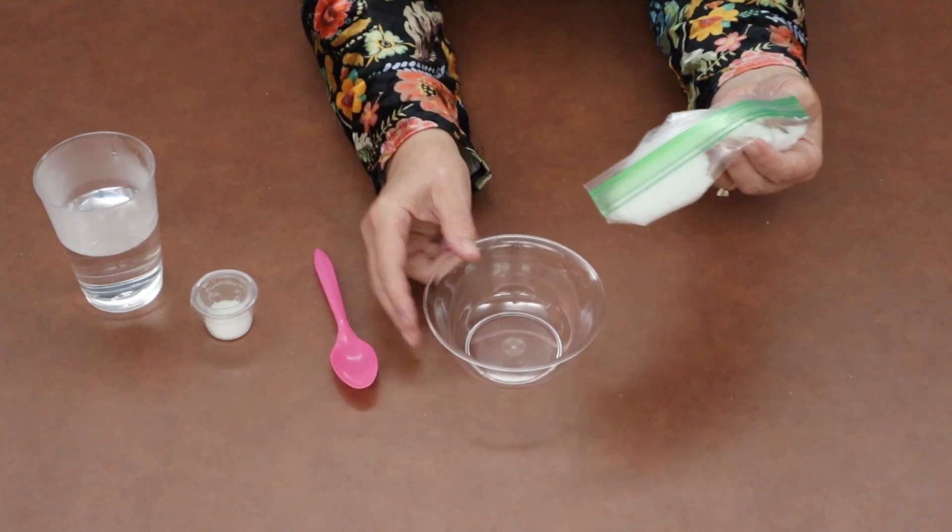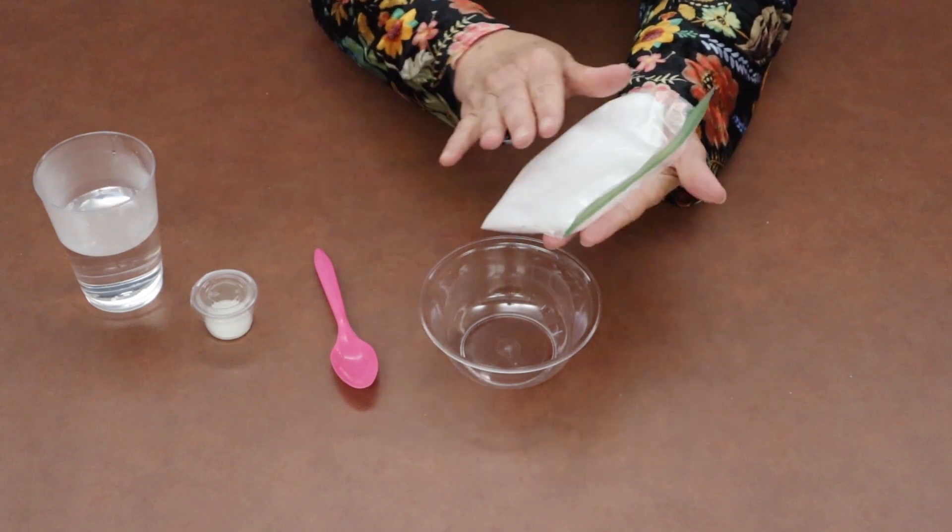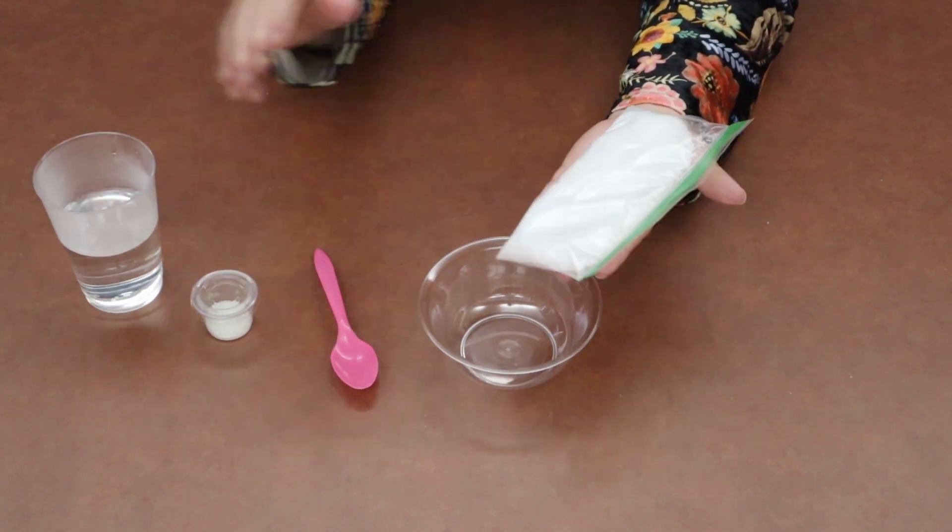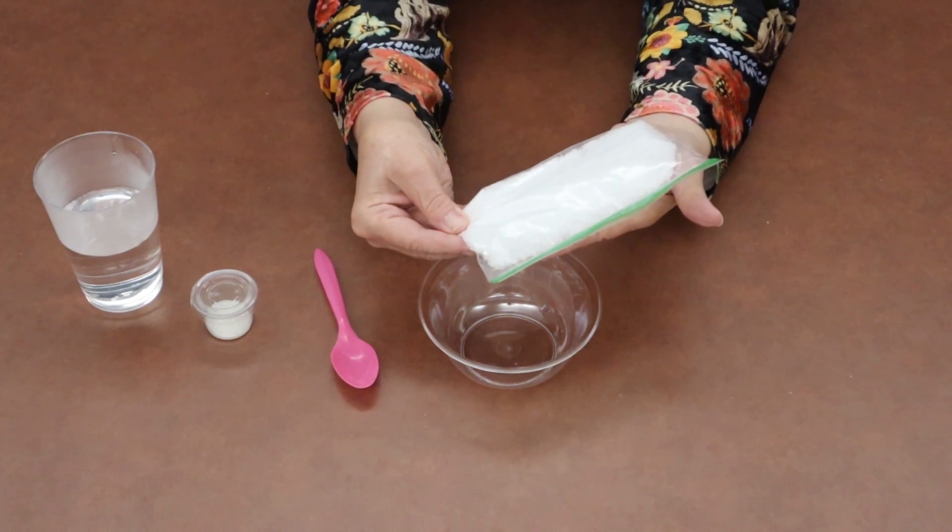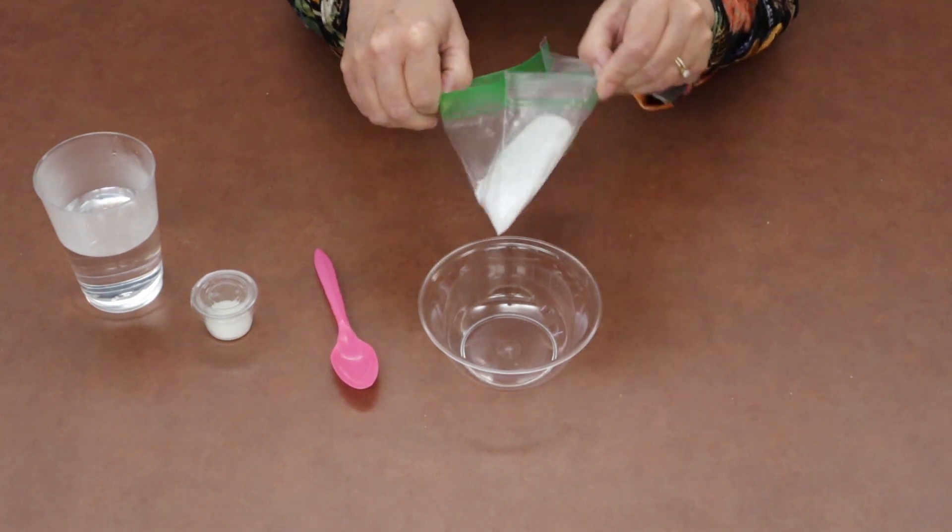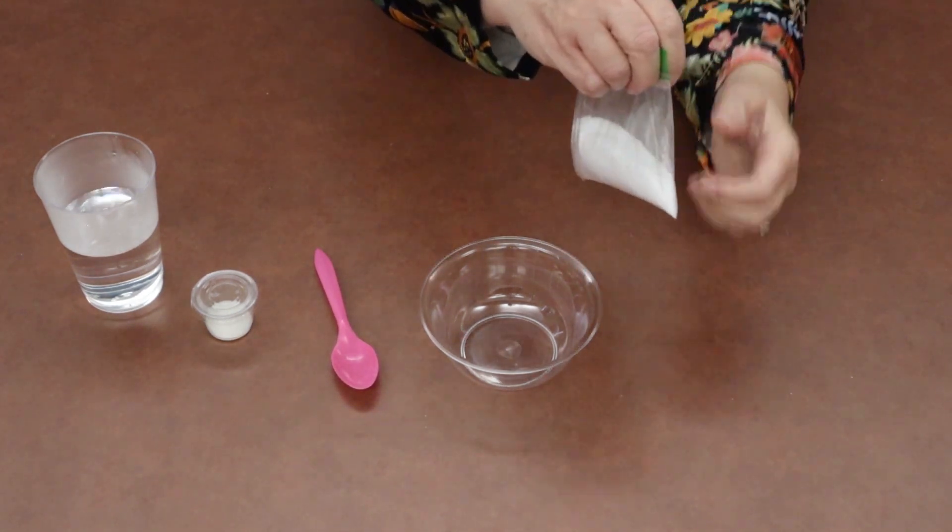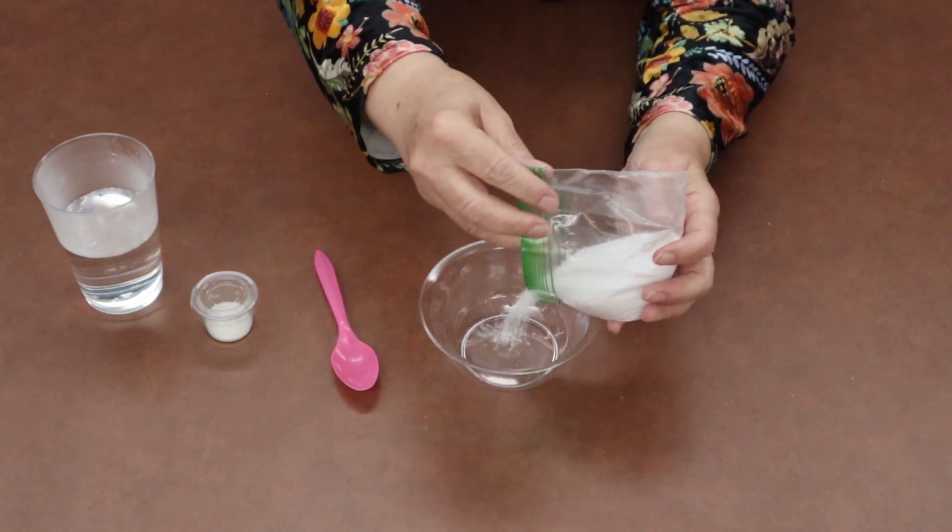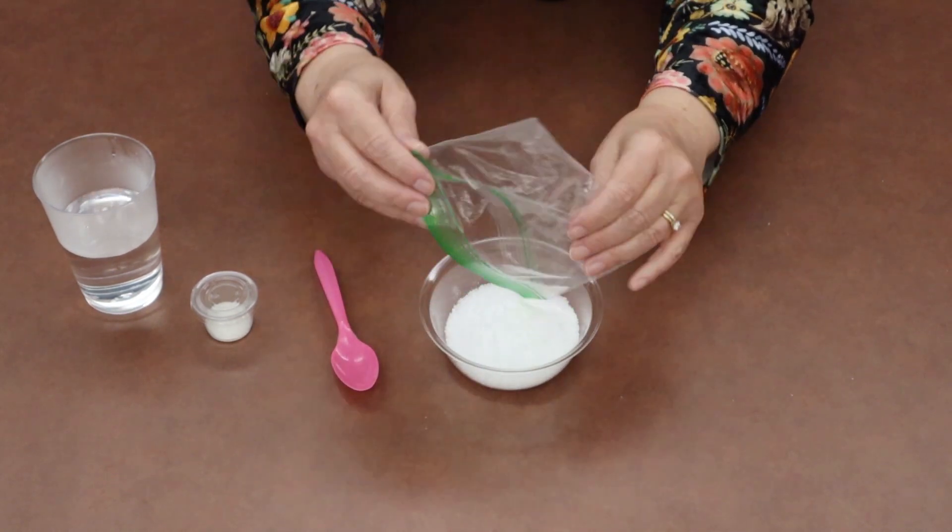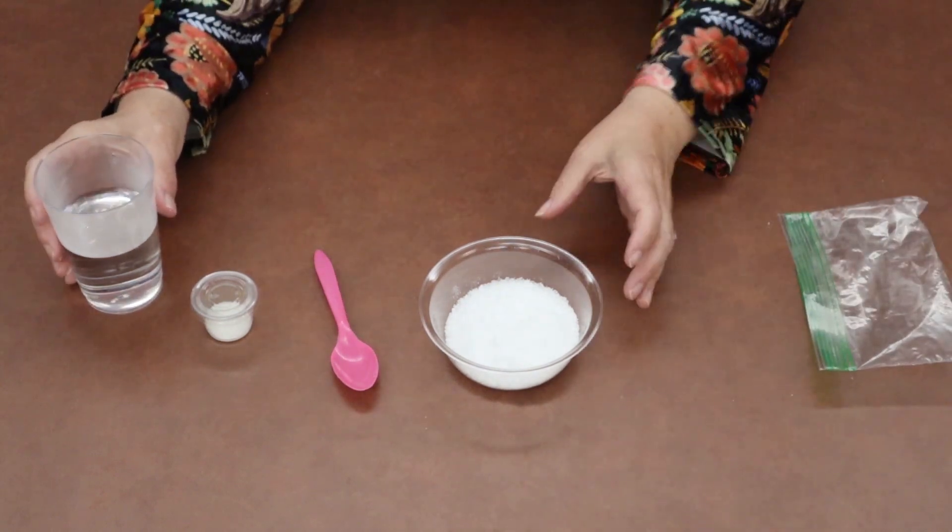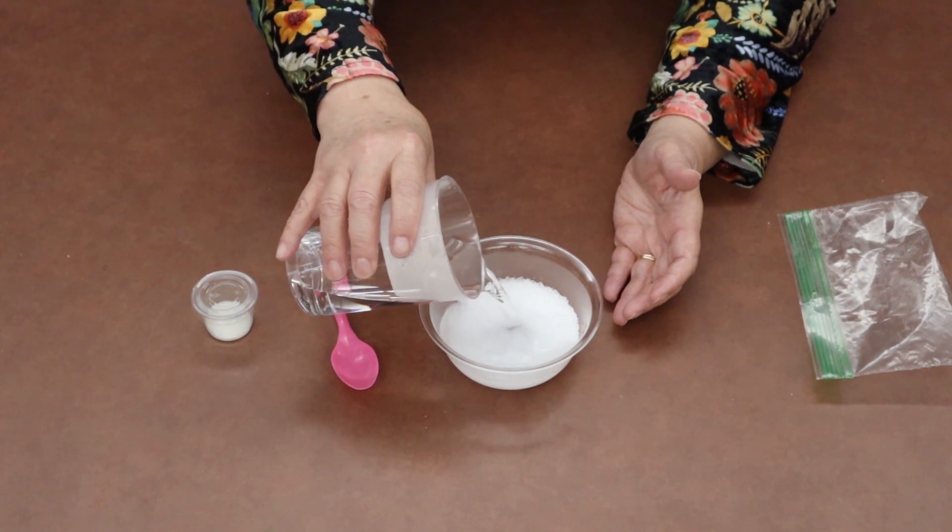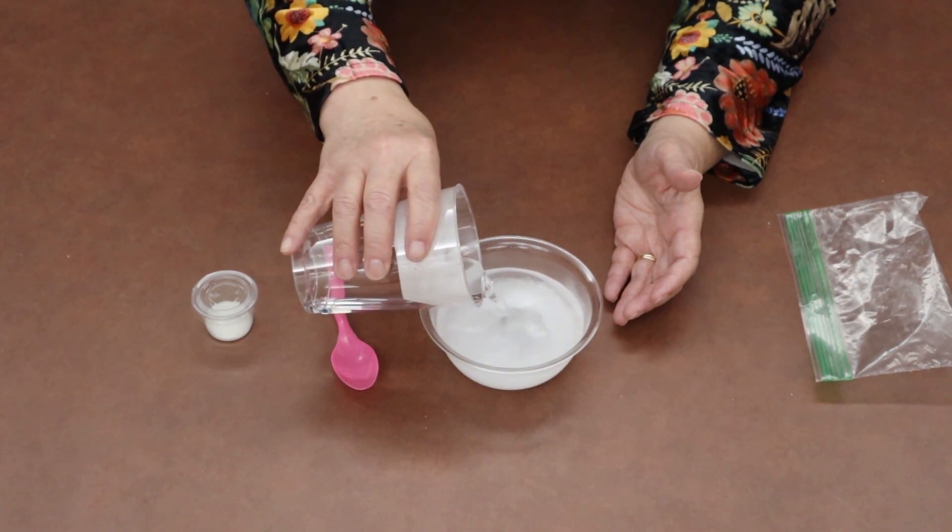The first thing you're going to do is put the Epsom salt in the bowl. The ratio on this is the same amount of Epsom salt as you have water. You've got a half a cup of Epsom salt in your bag, so if you want to use the whole bag at one time, you certainly can. Just pour it in the bowl, pour it all out. Then you'll add your warm water just like that, just pour it in the bowl.